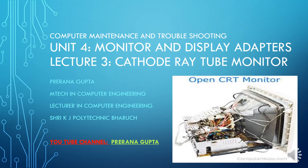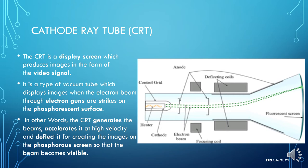Welcome everyone. This is lecture number three of Unit 4: Monitor and Display Adapters. Today we are going to learn about the cathode ray tube monitor, also known as the CRT monitor. The CRT monitor is a display screen which produces images in the form of a video signal. It is a type of vacuum tube which displays images when the electron beam from the electron gun strikes on the phosphorescent surface.